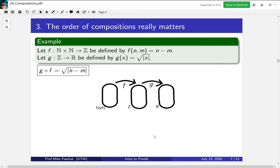If we denote this in a diagram, f will go from ℕ×ℕ to the integers, and then g will pick up that integer and send it to the reals. So it'll pick up this integer here and send it to the reals. This is what g composed with f looks like.